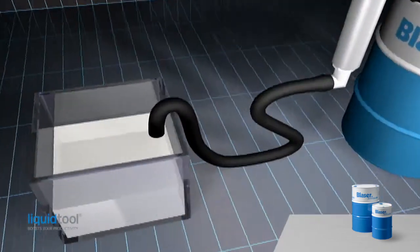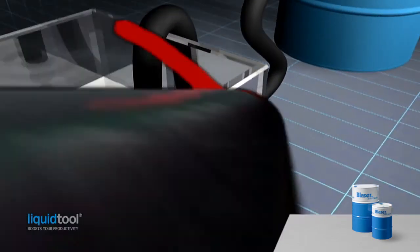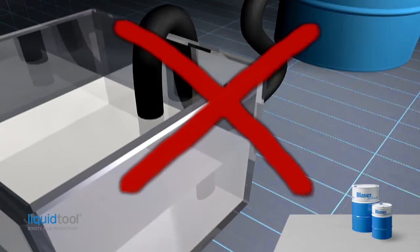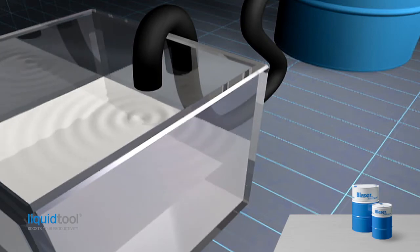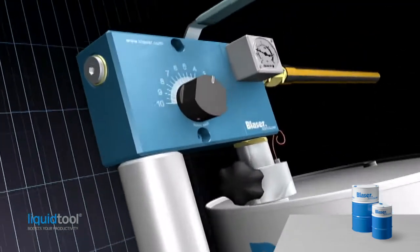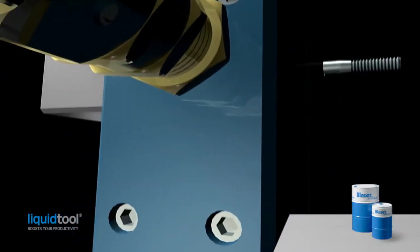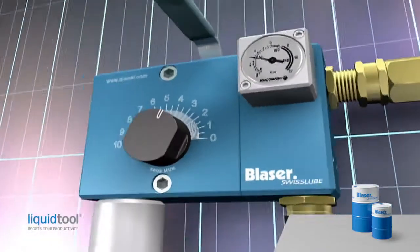The drain hose must not be immersed in the mixed emulsion in the sump, otherwise the appearance and concentration of the freshly mixed emulsion cannot be checked. This also prevents any return flow back to the concentrate in the drum. For fixed wall-mounted installation, a different drain hose or pipe to the machine sump is often used.